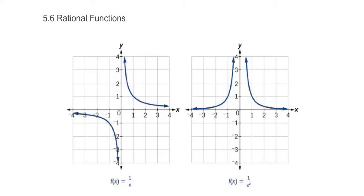Section 5.6, rational functions. We have two toolkit functions that are rational functions: the reciprocal, the 1 over x function, f of x equals 1 over x, and f of x equals 1 over x squared, which is our reciprocal squared function.